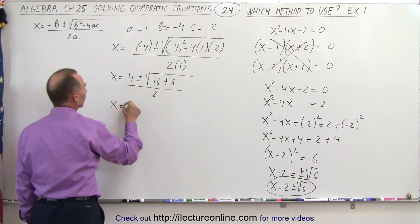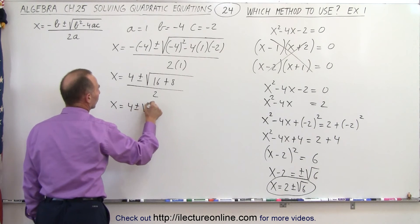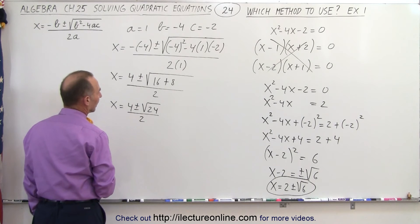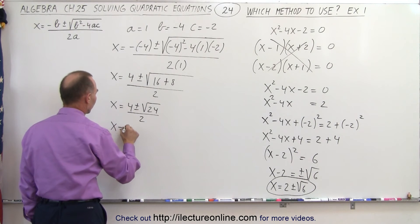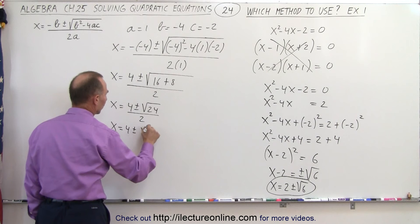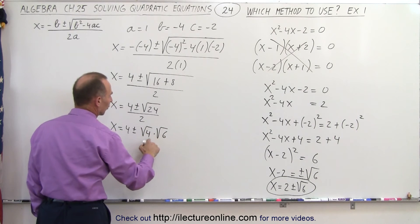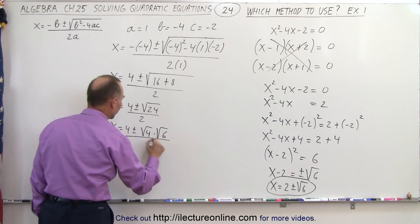Continuing we have x is equal to four plus or minus the square root of 24 divided by two. And we can write this as x is equal to four plus or minus the square root of four times the square root of six because four times six is 24 divided by two.